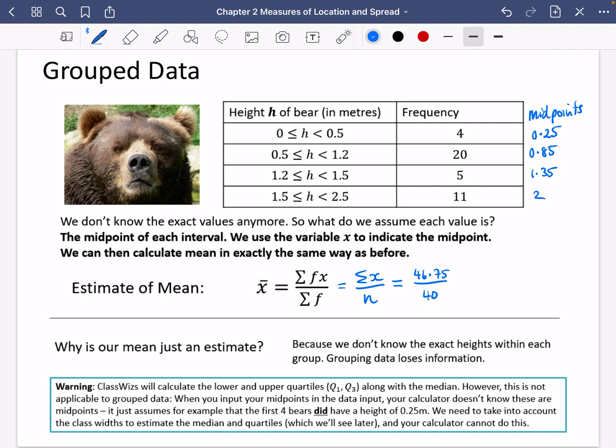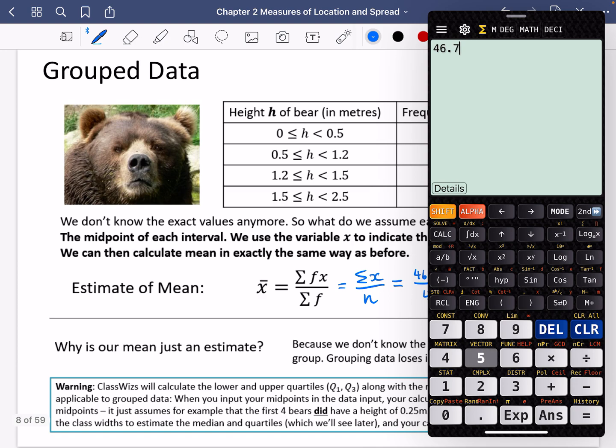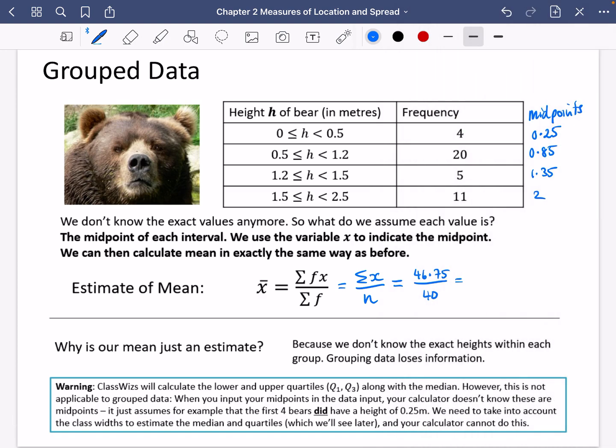And the number of values was 40. I can check that that's going to work. 46.75 divided by 40, 1.16875.